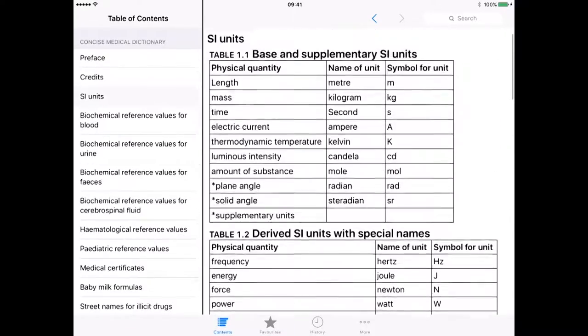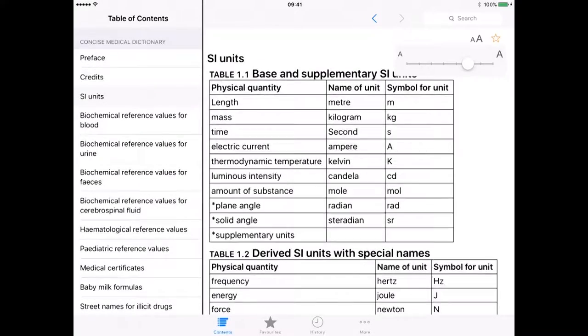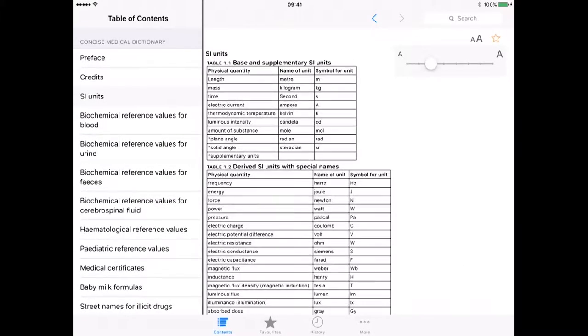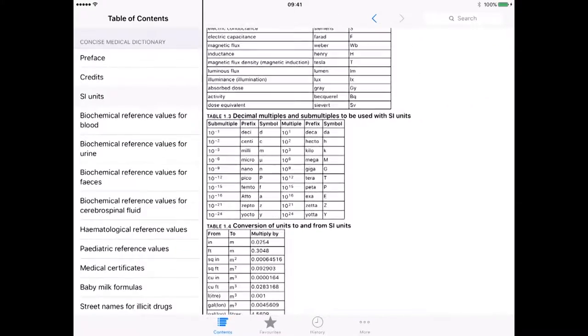Now if I want to see a bit more information, I can go in here at the top and press those two A's and that will allow me to adjust the text size. Now I can see a lot more on the actual app.